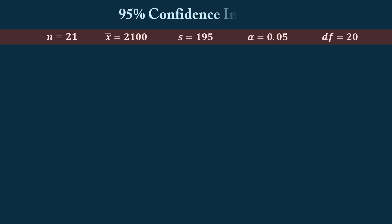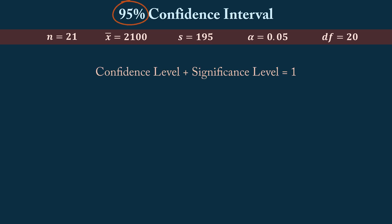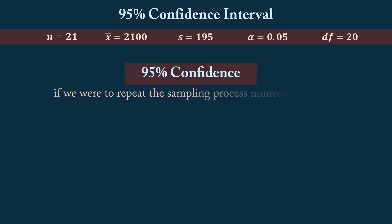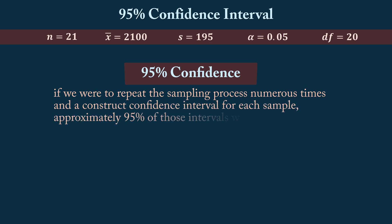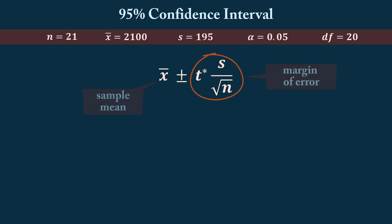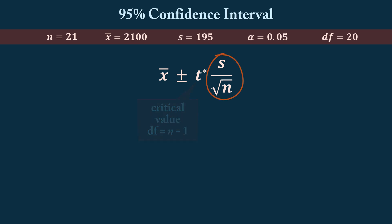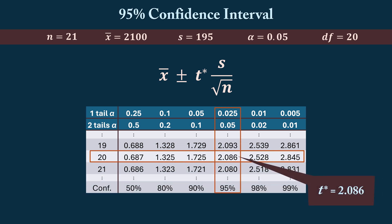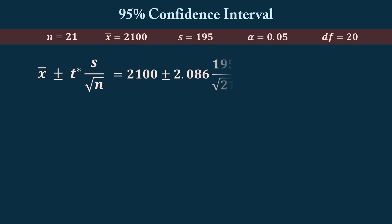Now let's construct a 95% confidence interval for the population mean. Note that confidence level and significance level alpha are complementary, so the 95% confidence level corresponds to our significance level alpha of 0.05 — that is, 1 − 0.95 = 0.05. Applying a 95% confidence level means that if we were to repeat the sampling process numerous times and construct a confidence interval for each sample, approximately 95% of those intervals will capture the true population mean. Using the t-distribution, the formula is: sample mean ± (t* × s/√n), where t* is the critical value with n−1 degrees of freedom. Plugging in the values, we obtain a margin of error of 88.76.